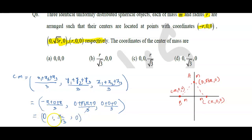So the coordinates are (0, R/√3, 0). The center of mass is (0, R/√3, 0). Option D is the correct answer. Thank you.